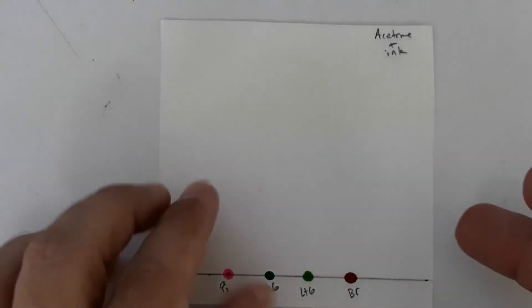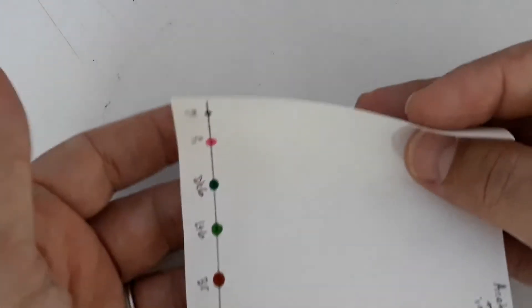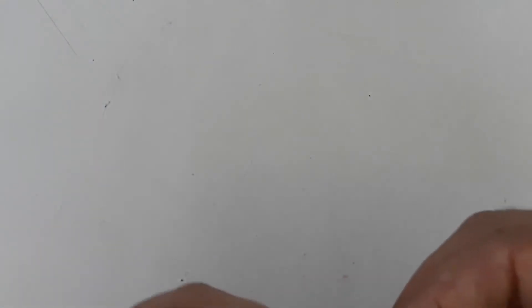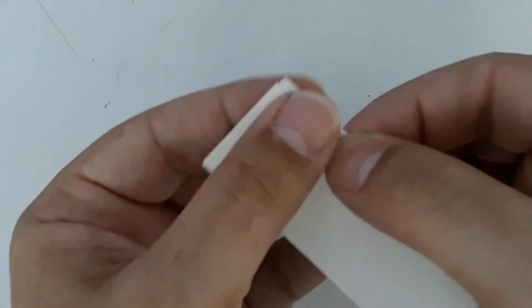All right, so the paper is almost set up here. We need to fold it. We're going to fold it what's called accordion style. I'm going to fold it once or twice, just alternating front or back so that it will stand up in the development chamber.